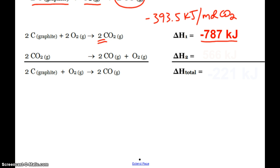it's negative 393.5 kilojoules per one mole of carbon dioxide. The second equation is the reverse of the combustion of carbon monoxide. Typically, combustion is an exothermic process, so it has a delta H of negative 566. But since this reaction is the reverse of that,